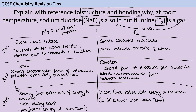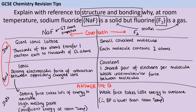This is a really common question which has come up several times with different substances, so we have a good idea of what it takes to get six marks. Firstly, because they've named two different substances, in order to get into level three and get five or six marks, you need to have discussed both of them. Even if you've written a perfect answer about sodium fluoride, you can't get more than four marks. The second thing you need to have done is actually answer the question and talked about why sodium fluoride is a solid and fluorine is a gas — some reference to the amount of energy taken to overcome the forces between those particles. AQA have credited level three as long as you've discussed either structure or bonding.